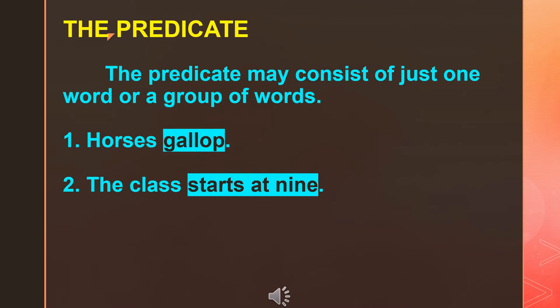Let us see the examples. First one: horses gallop. Here, horses is the subject and gallop is the predicate. Here there is only one word in the predicate. Second one: the class starts at nine. Here the predicate is starts at nine. Here a total of three words are there in the predicate.